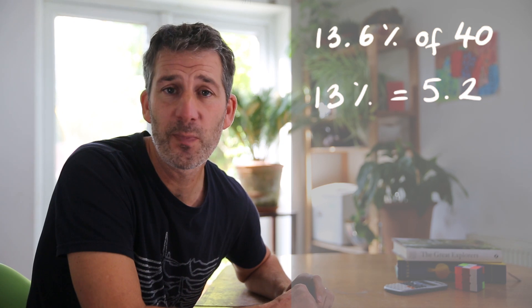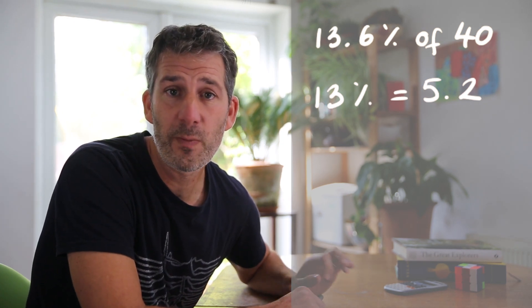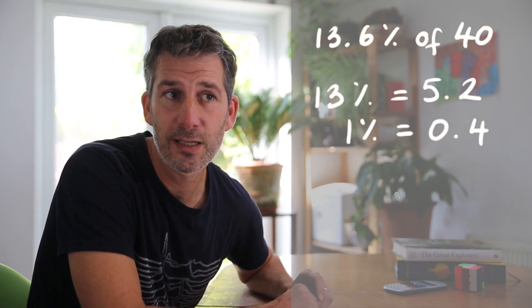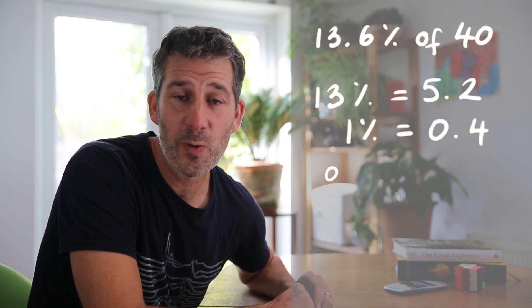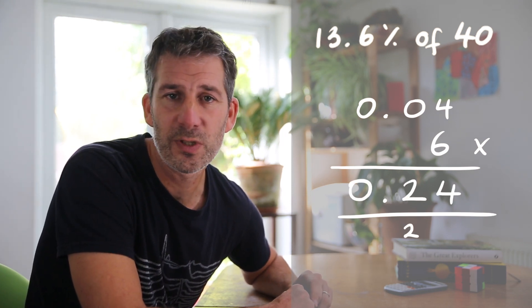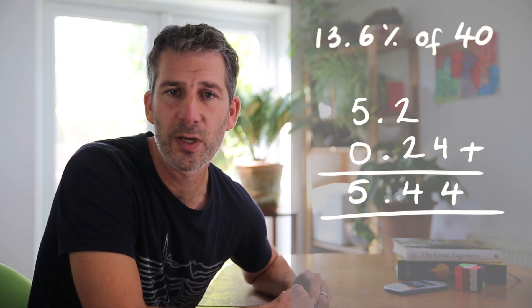So the first question was to find 13.6% of 40. Well, we'll assume that we can do the 13%, that gives us 5.2. And then the decimal, the 0.6%, I would find 1%, which is 0.4. I'm going to divide that by 10 again to get 0.1%. So 0.1% will be 0.04. So that's 0.1%. I need 6 of those. So I need 0.04 times 6, which is 0.24. So I've just got to add that on to my 13%, which was 5.2, wasn't it? So 5.2 add 0.24 gives us 5.44.